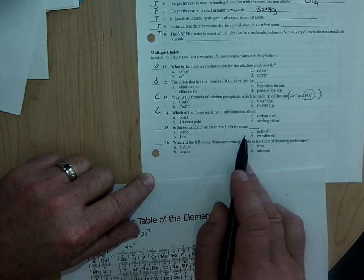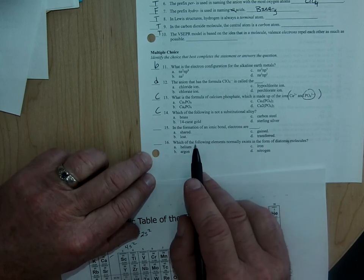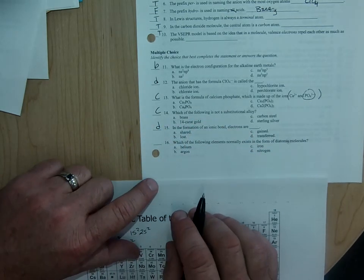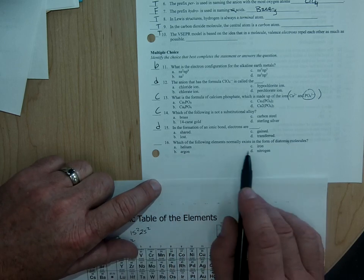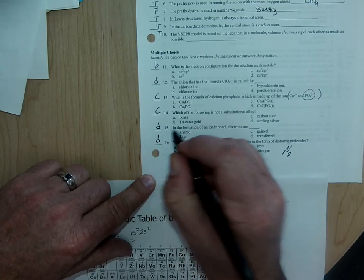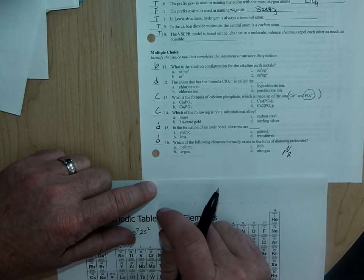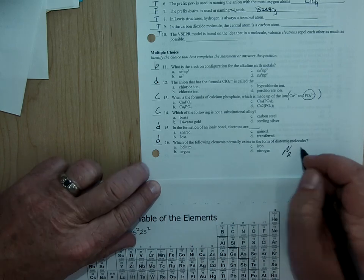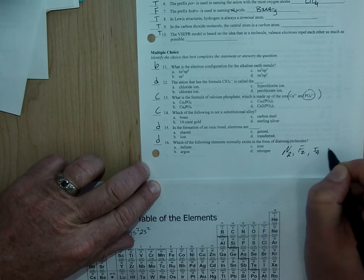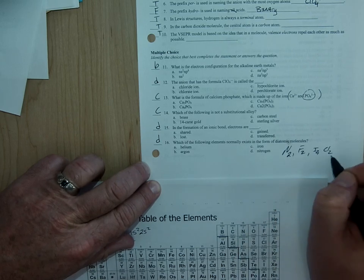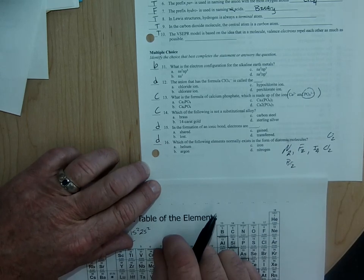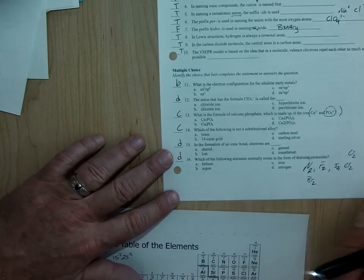In the formation of an ionic bond, electrons are transferred. And which of the following elements normally exists in the form of diatomic molecules? Nitrogen. Nitrogen exists as N2, which is a diatomic molecule, so that's D. You can remember, never fear ice cold beer, and that will get you most of the diatomic molecules. So N2, F2, never fear ice, right? So that's I2, Cl2 for cold, O2, and Br2. So never fear ice cold beer will get you to most of the diatomic molecules that you need to know.